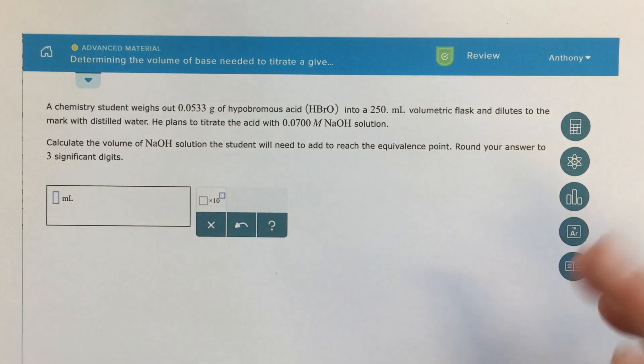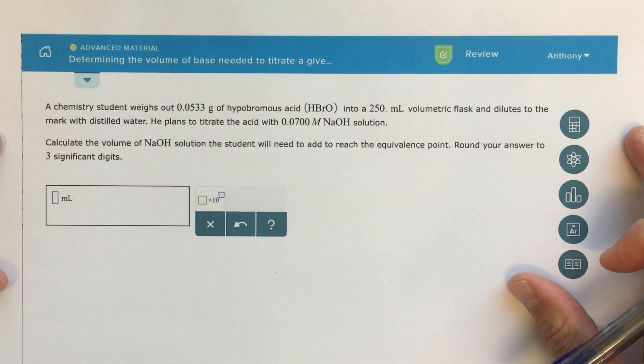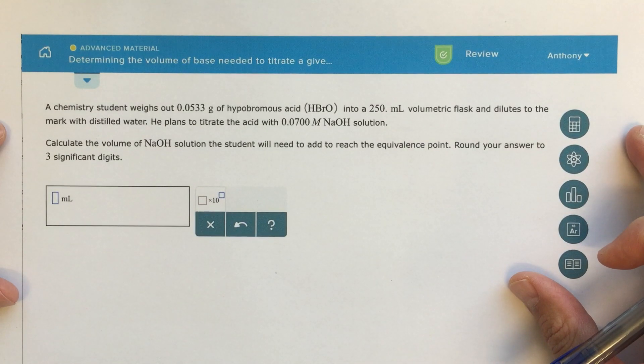Alright class, so this is an advanced topic, and the title of it is Determining the Volume of Base Needed to Titrate a Given Mass of Acid.